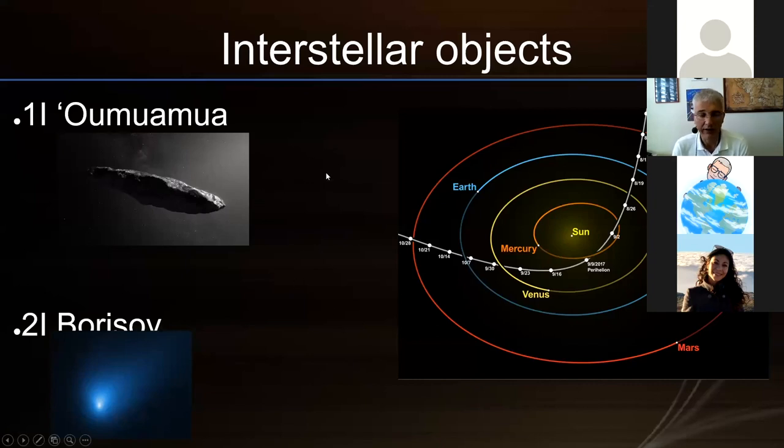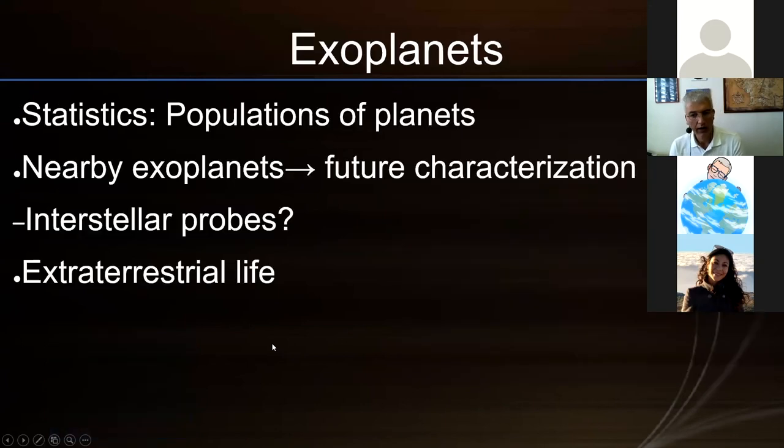We are starting to detect interstellar objects. We are starting to have the capability to do that. In 2018 we detected the first clear, obvious interstellar object, which was Oumuamua. And then in 2019 we detected the Borisov comet. These are the first two undoubtedly objects that come from outside the solar system. But in the next few years, we're going to probably be able to detect many more.